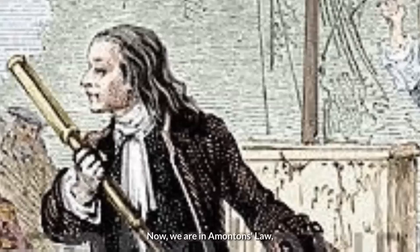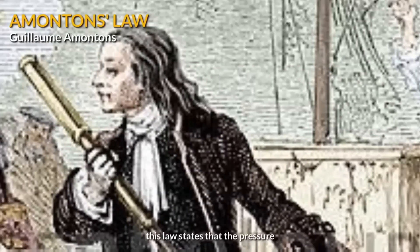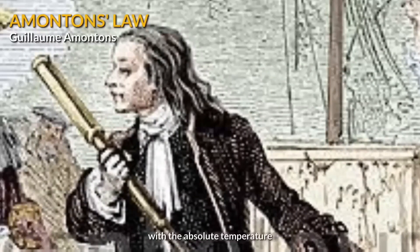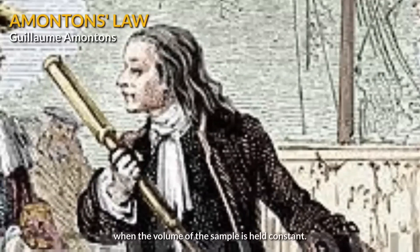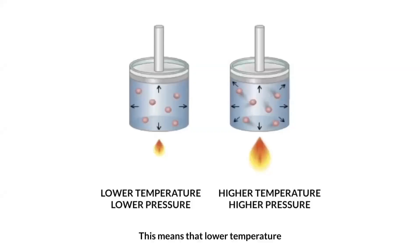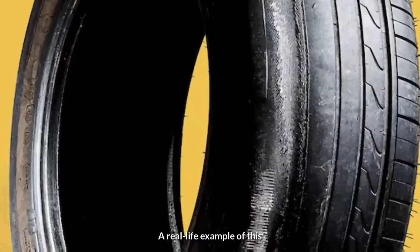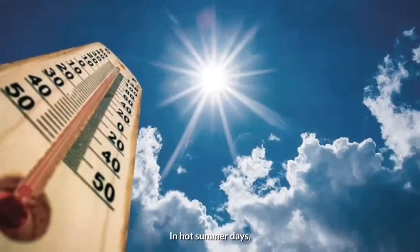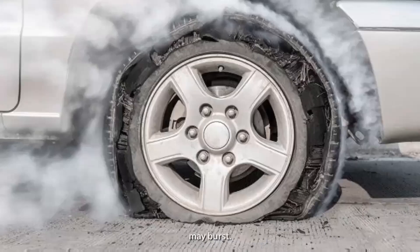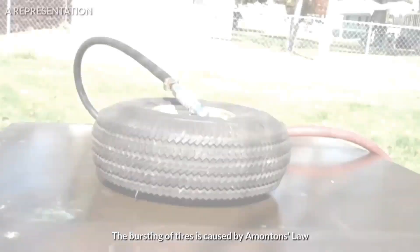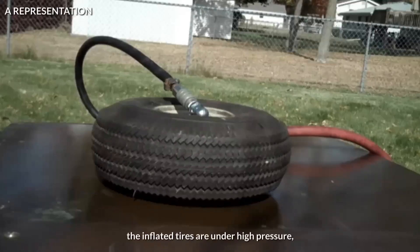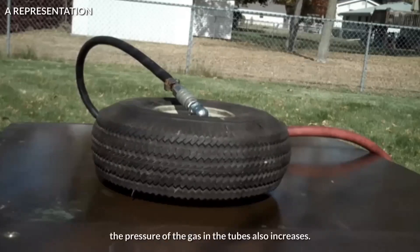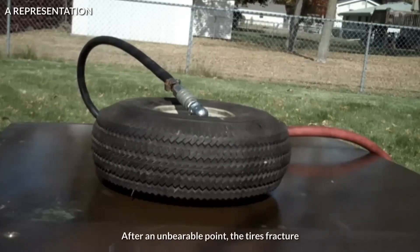Now, we are in Amontons' Law. This law states that the pressure of an ideal gas varies directly with the absolute temperature when the volume of the sample is held constant. This means that lower temperature means lower pressure, and higher temperature means higher pressure. A real-life example of this is your vehicle tire. In hot summer days, the inflated tires of vehicles may burst. The bursting of tires is caused by Amontons' Law. The inflated tires are under high pressure. When the temperature of the air rises, the pressure of the gas in the tubes also increases. After an unbearable point, the tires fracture.